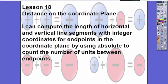We're going to be learning about distance on the coordinate plane. Our I can statement is I can compute the length of horizontal and vertical line segments with integer coordinates for endpoints in the coordinate plane by using absolute value to count the number of units between the endpoints.